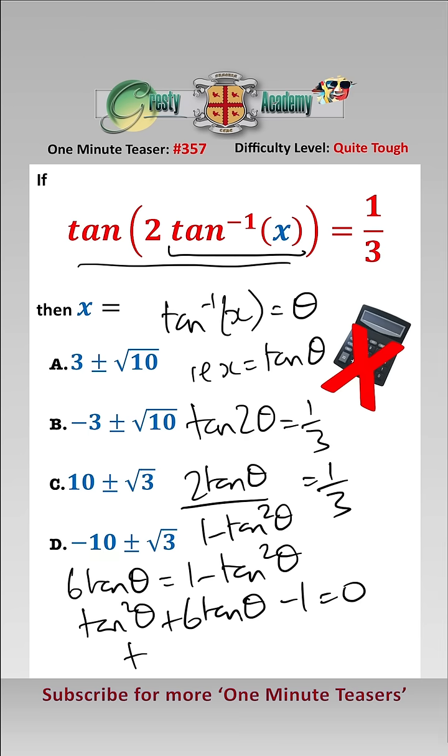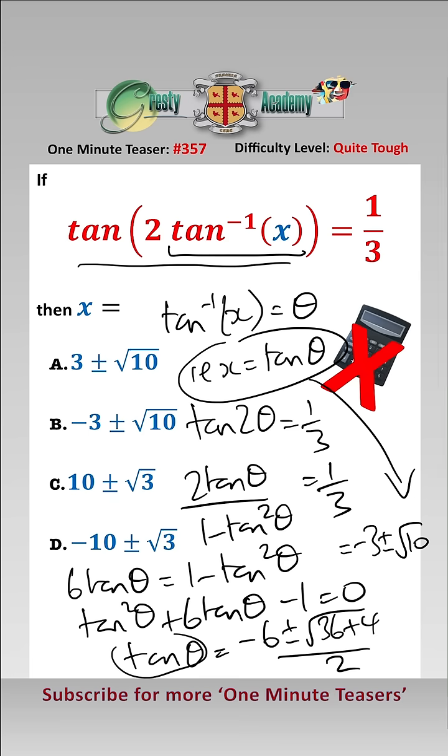Solving that with the quadratic formula, we get that tan theta equals minus 6 plus or minus the square root of 36 add 4 over 2, which equals minus 3 plus or minus root 10, and tan theta is the same thing as x, and therefore the answer for x is minus 3 plus or minus root 10, which is answer b.